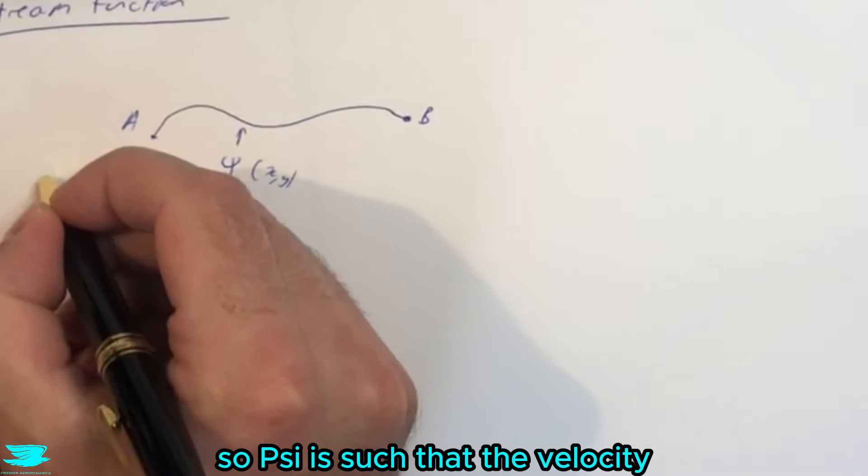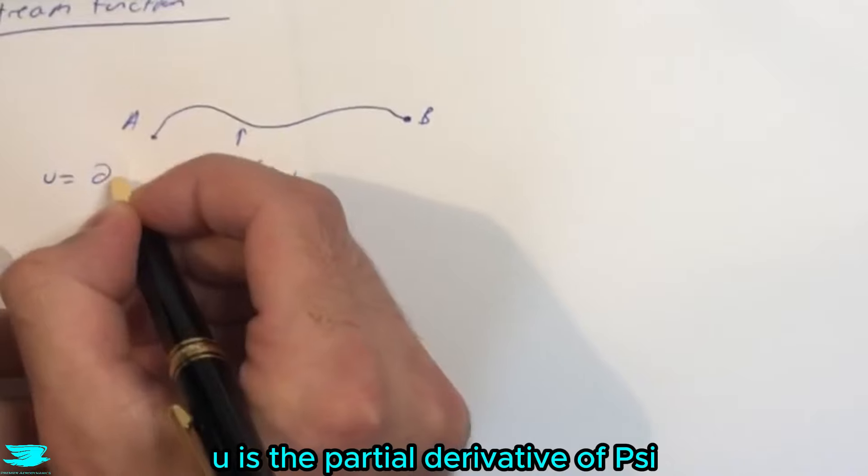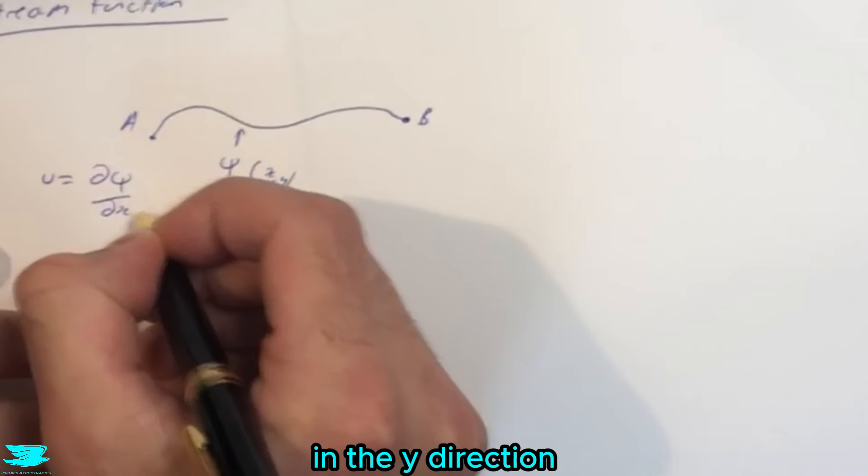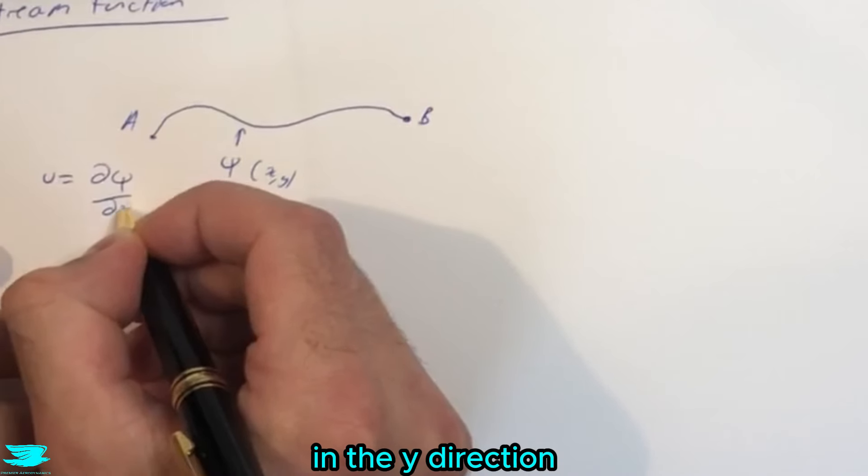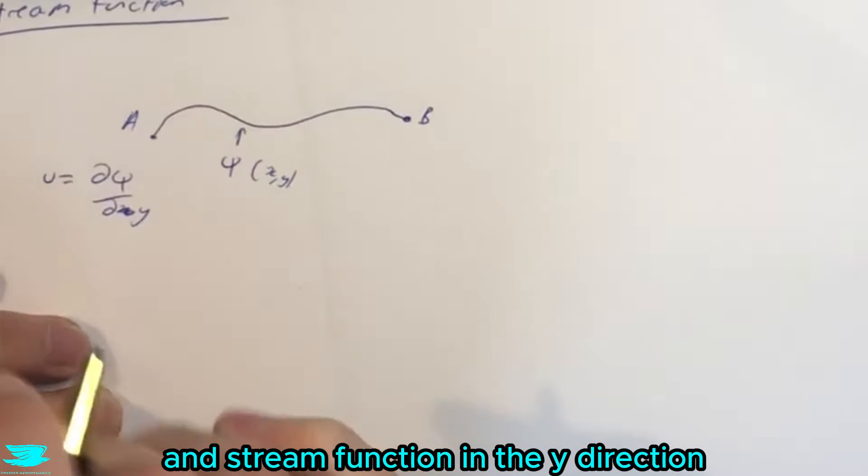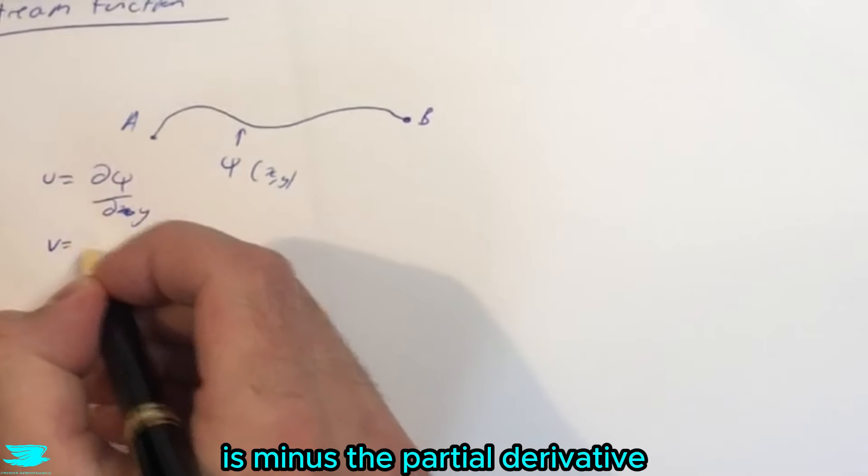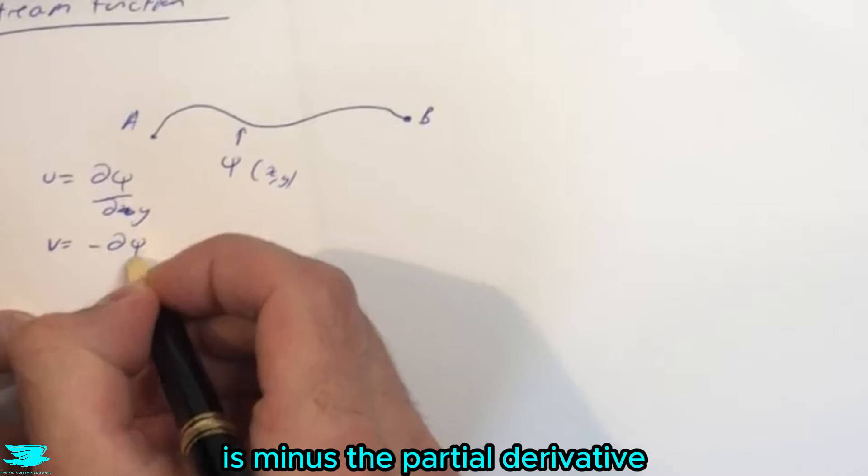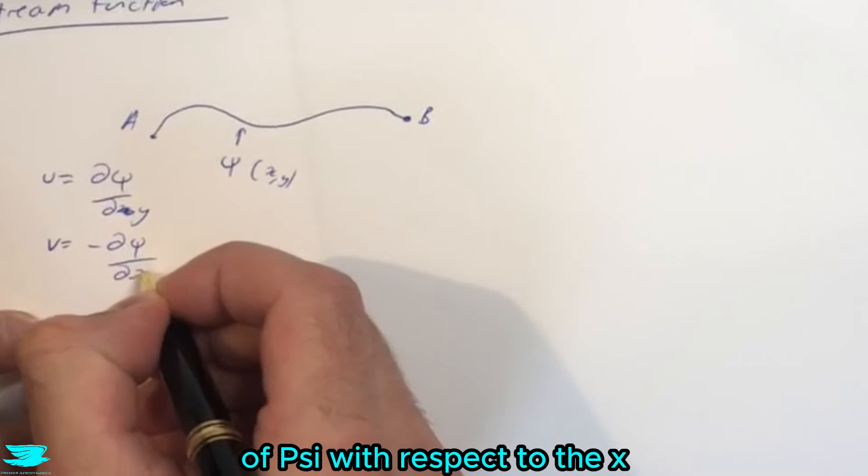So psi is such that the velocity u is the partial derivative of psi in the y direction—this is the difference between the velocity potential and stream function—in the y direction, not x direction. v is minus the partial derivative of psi with respect to x.